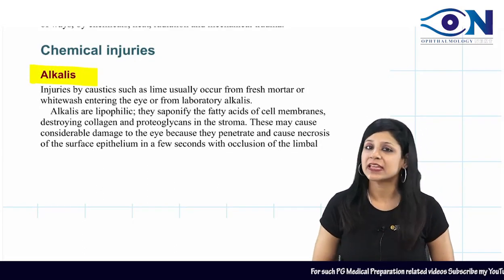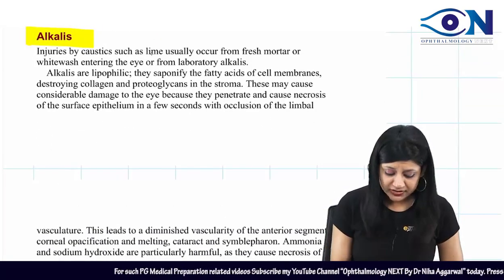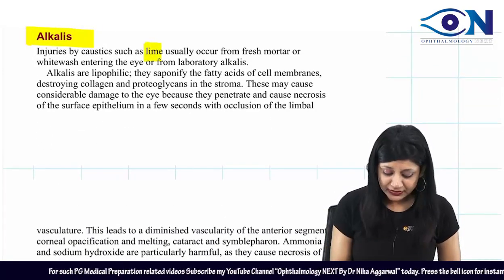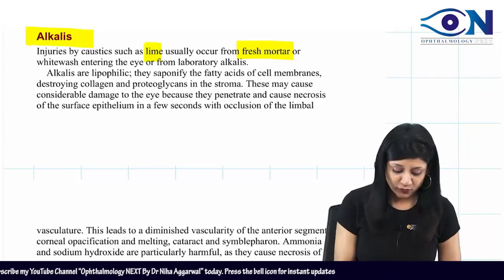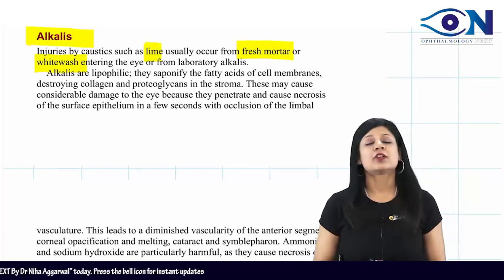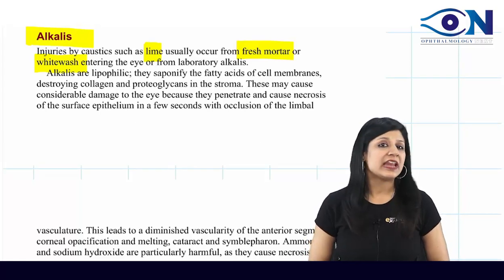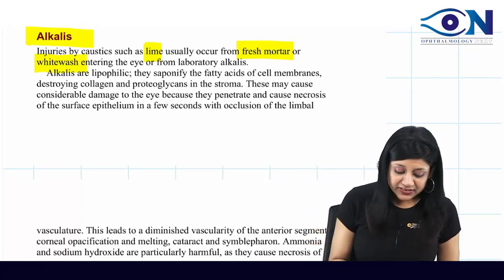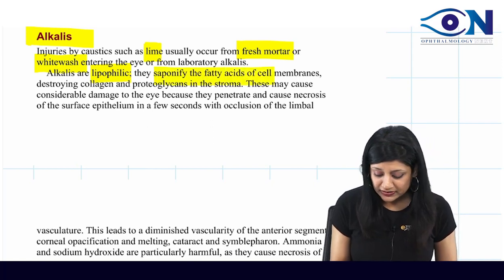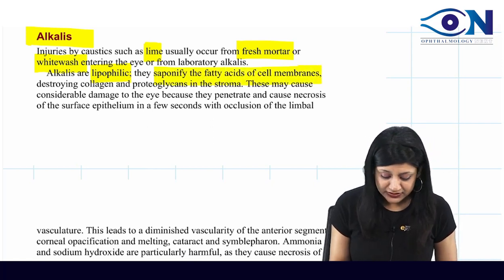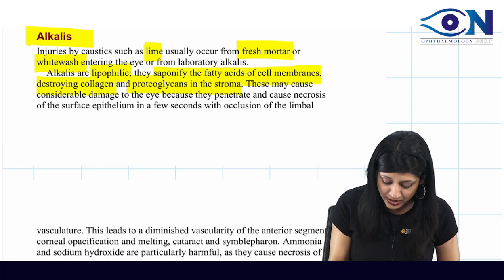Starting with alkali injuries — caustics such as lime usually occur from fresh mortar or whitewash. They can also occur in laboratories or in day-to-day life. Alkalis are lipophilic, so they saponify the fatty acids of cell membranes and destroy collagen and proteoglycans in the stroma.